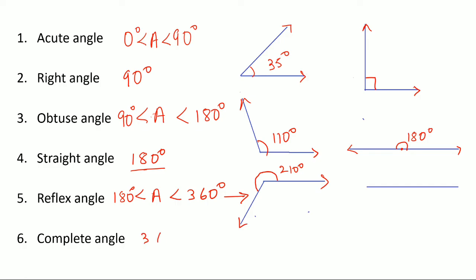The last type is the complete angle, which means exactly 360 degrees. We start from here and take a complete rotation — a full round — and come back to the starting point. Using two arrows to show, we have completed 360 degrees, and that is a complete angle.